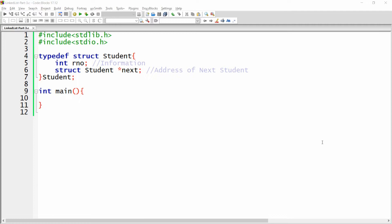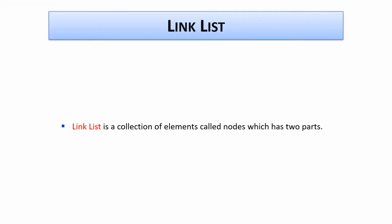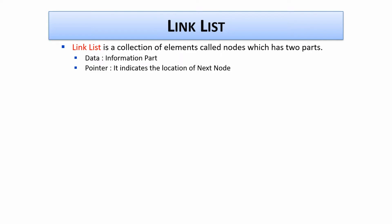But first you need to understand the concept of a linked list. So what is a linked list? A linked list is a collection of elements called nodes which has two parts. The first part is known as an information part in which we can store the data. In our example, student roll number is the information part, and the other is the pointer which indicates the location of the next node. Here in our example, the address of the next student is stored into the pointer, that is pointer next.